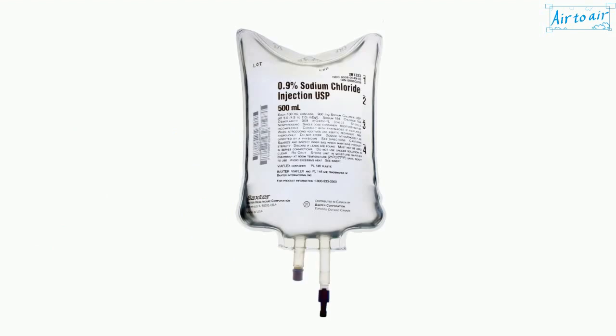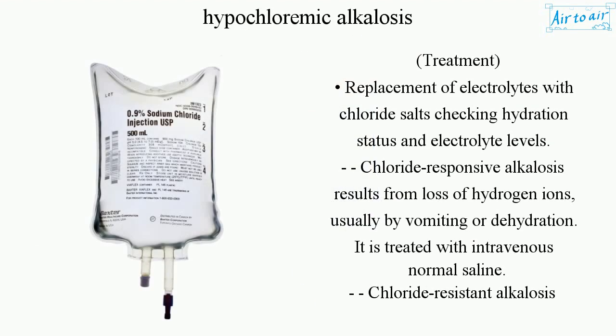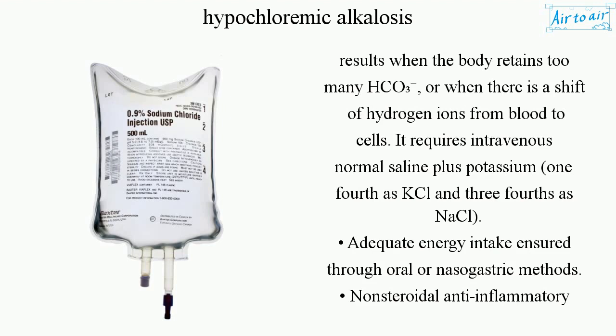Treatment involves replacement of electrolytes with chloride salts and checking hydration status and electrolyte levels. Chloride-responsive alkalosis results from loss of hydrogen ions, usually by vomiting or dehydration, and is treated with intravenous normal saline. Chloride-resistant alkalosis results when the body retains too many HCO₃⁻ or when there is a shift of hydrogen ions from blood to cells; it requires intravenous normal saline plus potassium.